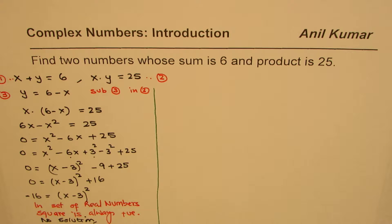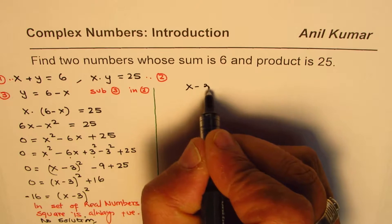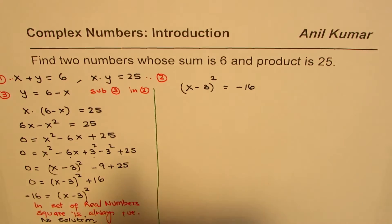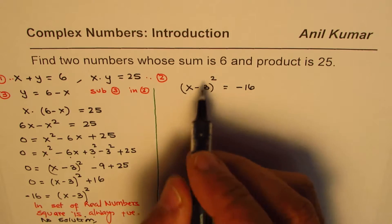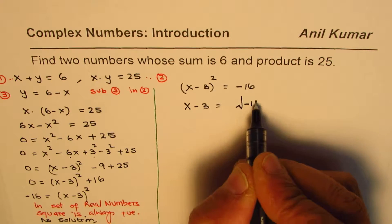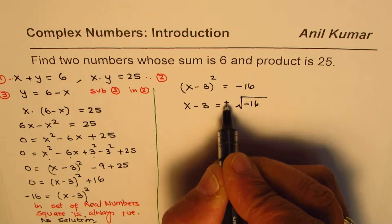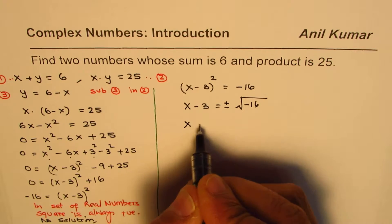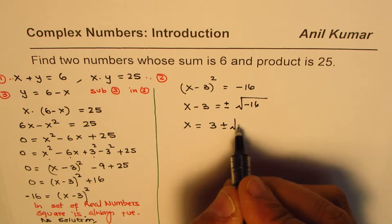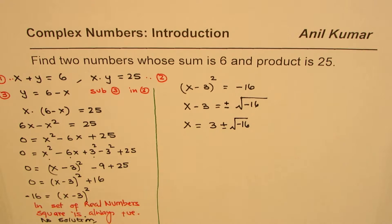Let's continue from here and try to find a solution and see whether our conditions are met. We have (x minus 3)² equals minus 16. Taking the square root: x minus 3 equals plus or minus the square root of minus 16. Therefore x equals 3 plus or minus the square root of minus 16.